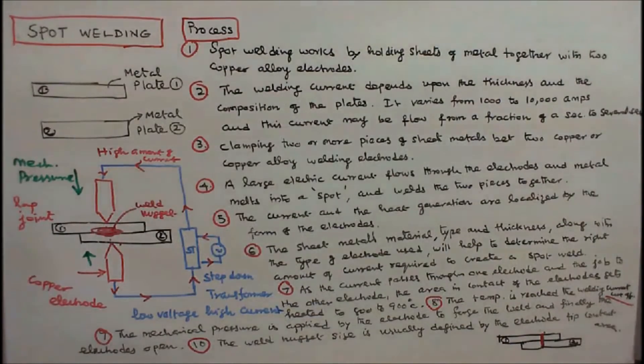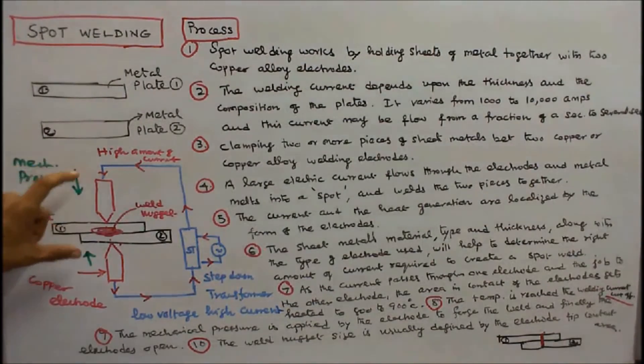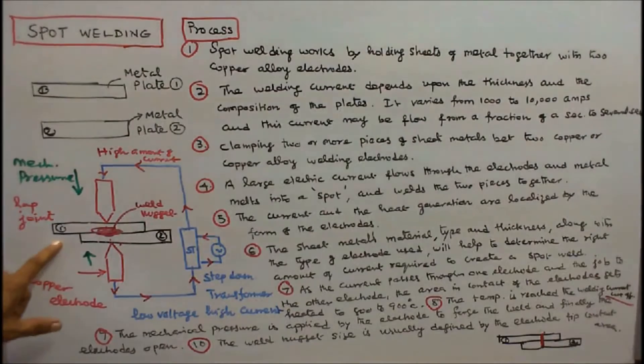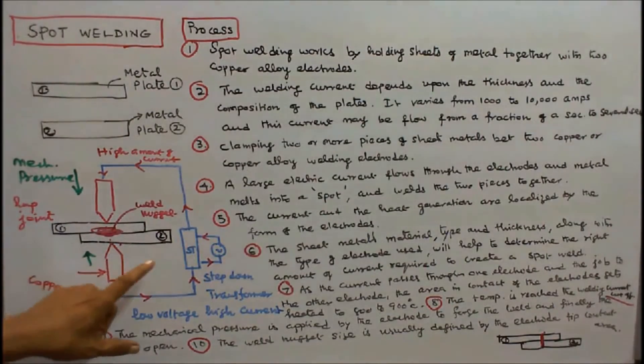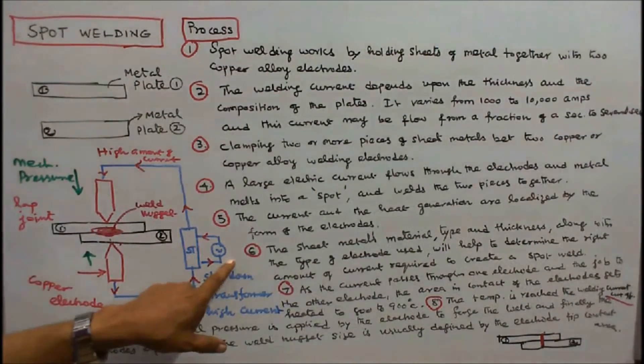Now we will see the process of spot welding. This is metal plate one, this is metal plate two, and two electrodes, copper electrodes. This is a lap joint, one step down transformer to provide high current and low voltage. This is the source voltage.